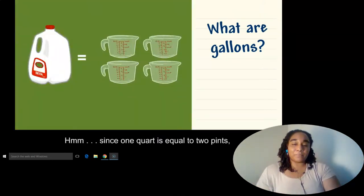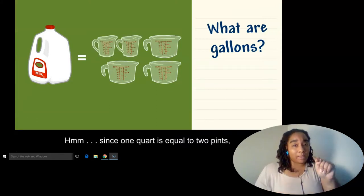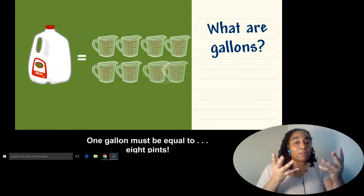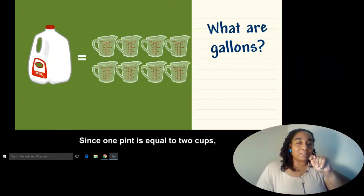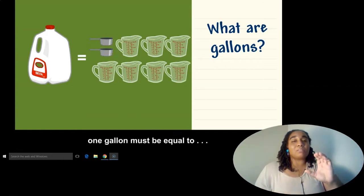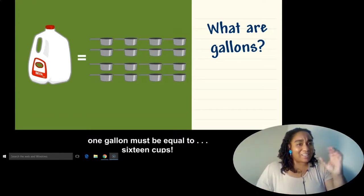Since one quart is equal to two pints, one gallon must be equal to eight pints. Since one pint is equal to two cups, one gallon must be equal to 16 cups.